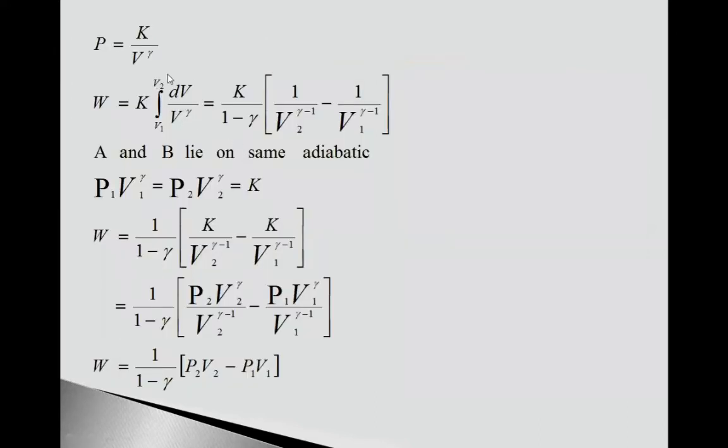But this is the integration sign from V1 to V2. V^γ means if we move this to the upside, it is V^(-γ). So integration of V^(-γ) is V^(γ+1) upon (-γ+1), or V^(-γ+1) upon (1-γ).